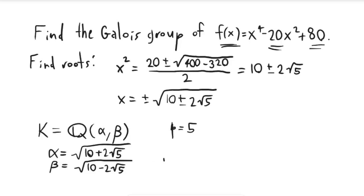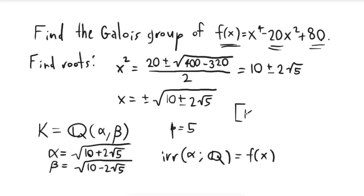What that means, for example, is that the minimal polynomial for alpha over Q is actually f(x), because f(x) has alpha as a root and f(x) is irreducible. So that tells us that the degree of the extension K over Q is at least 4, because if you just adjoined alpha to Q, the degree would be 4 since f(x) has degree 4 — and we're adjoining beta as well.